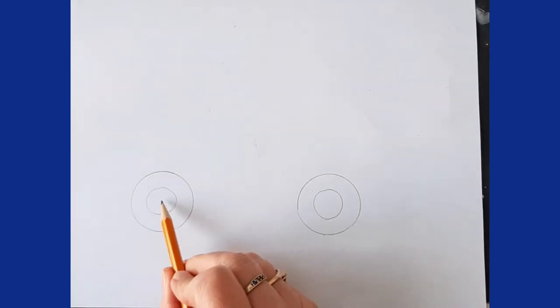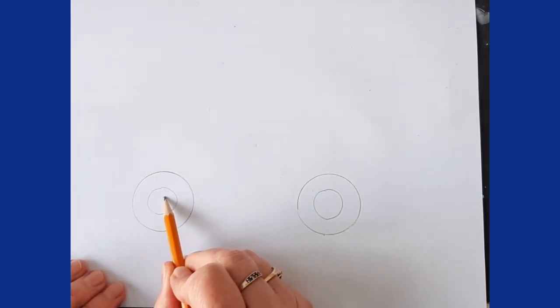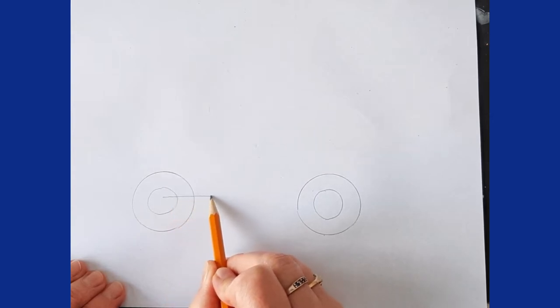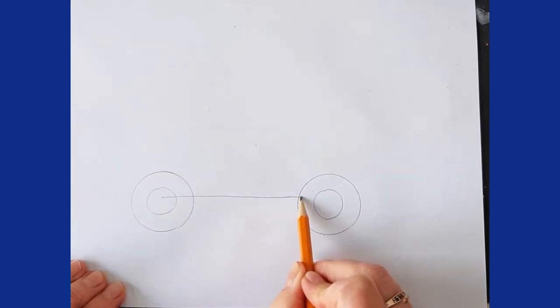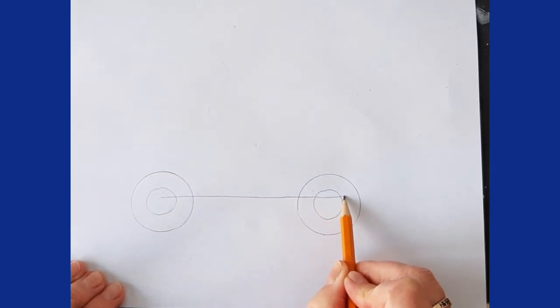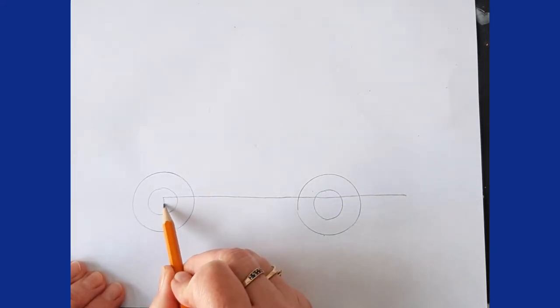The next part we're going to do is draw a line that goes from here to here. We're going to take that beyond about like that, and we're going to do a second one.